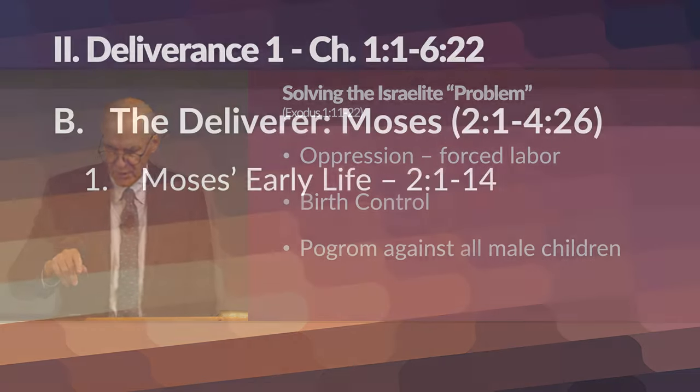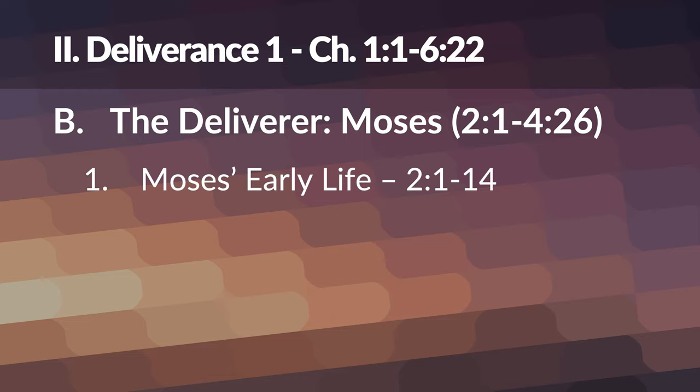Having failed twice with these indirect plots to undermine the growth of the Jewish population, the Egyptian monarch enacted a radical pogrom authorizing any Egyptian to kill any Jewish newborn male by drowning him in the river, but sparing the newborn females. If the midwives won't kill them, then any individual Egyptian had the right to kill young Jewish boys — just drown them in the Nile. And so from this we go to Deliverance One, where we are introduced to Moses.